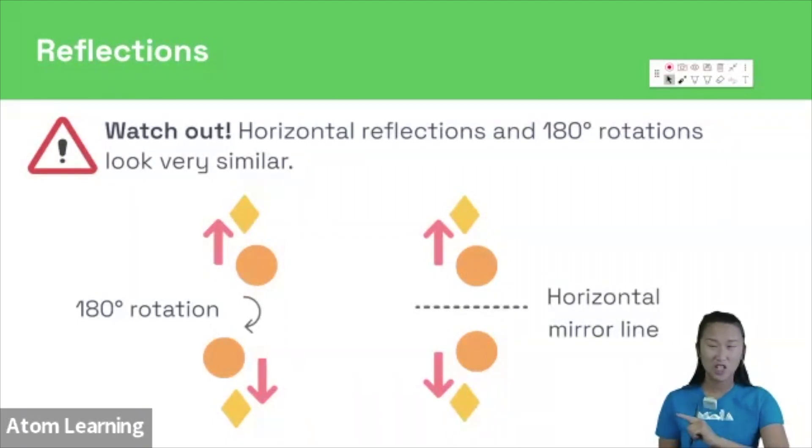In the rotation, the arrow goes from being on the left to being on the right, whereas in this reflection, it stays on the left. The arrow will only stay on the left with a reflection; no rotation would make this possible. So watch out for things like this.